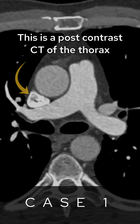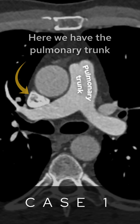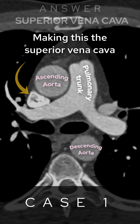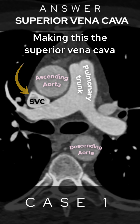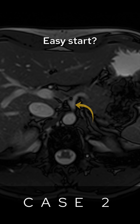This is a post-contrast CT of the thorax and we're looking at the mediastinum. Here we have the pulmonary trunk, ascending and descending aorta — making this the superior vena cava, or SVC, making its way to the right atrium. Easy start.